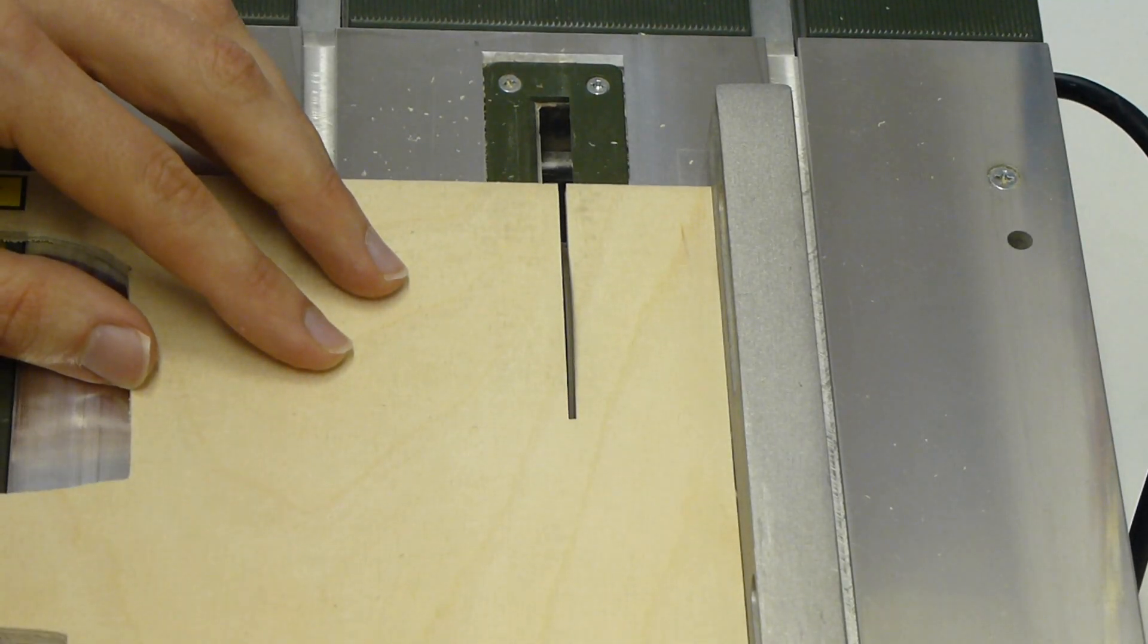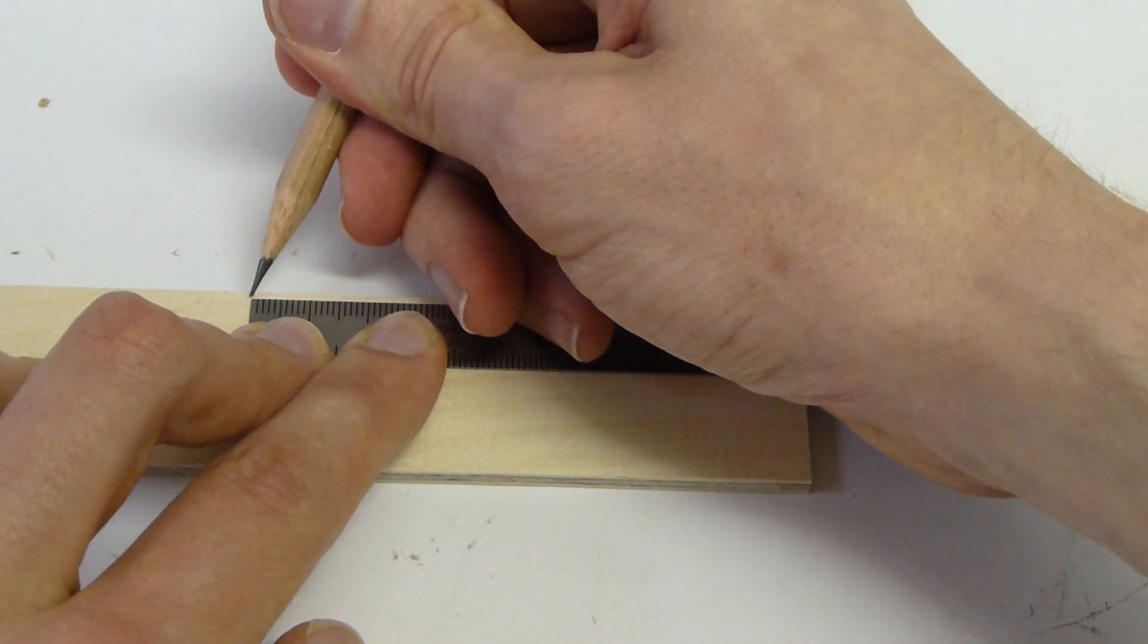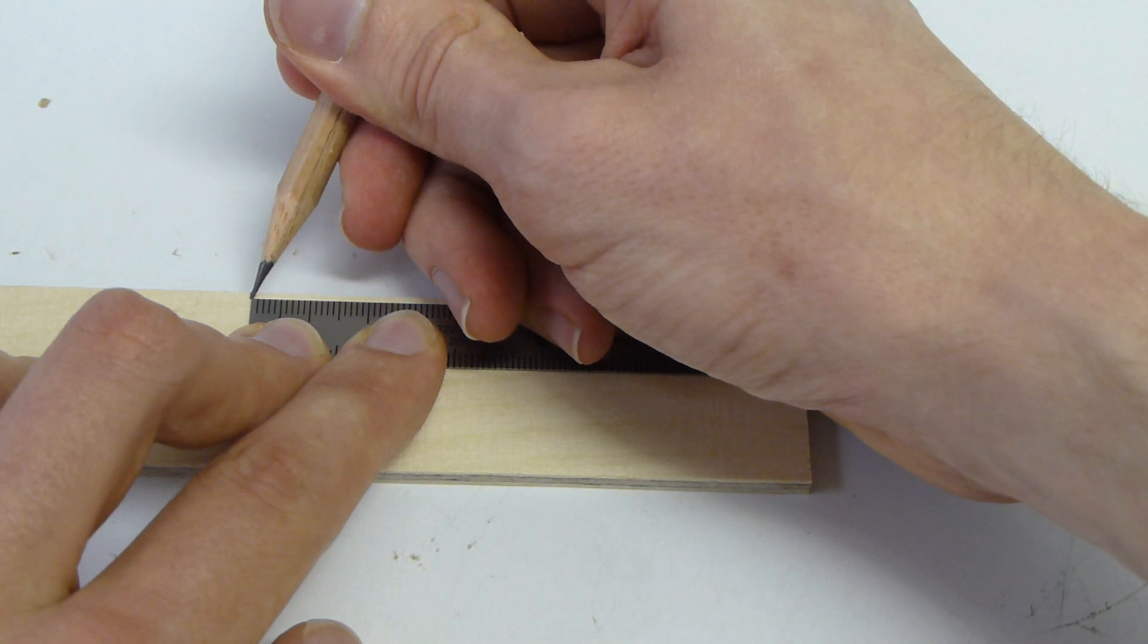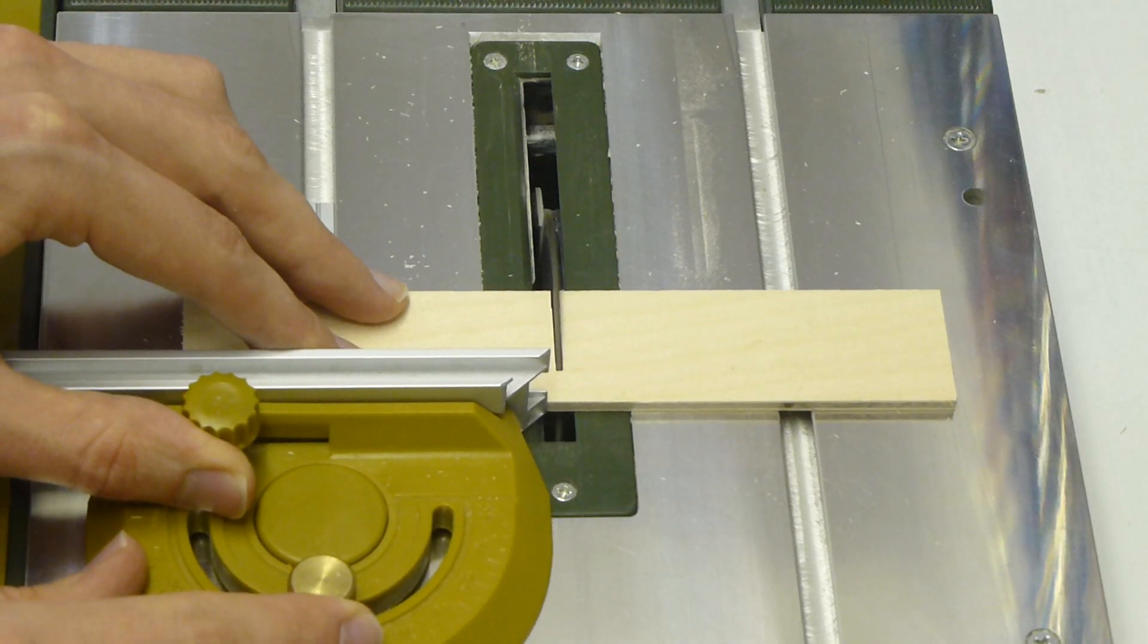Die Gehäuseteile können mit einer Handsäge oder mit einer Kreissäge zugesägt werden. Am besten eignet sich Sperrholz aus Birke, da es hochwertiger als Pappelsperrholz ist.